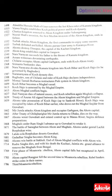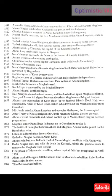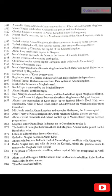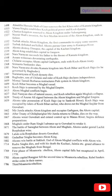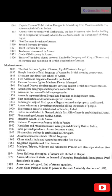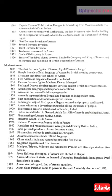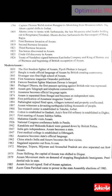In 1714, Rudra Singha dies; with his death, the Kashari-Jayantia alliance to remove the Mughals from Bengal ends. In 1769, the first phase of the Moamaria Rebellion takes place — the Ahom capital falls but is recaptured in April 1770. In 1783, the Ahom capital Rangpur falls a second time to the Moamaria rebels, whose leaders strike coins in their names. In 1786, the third Moamaria Rebellion takes place. In 1794, Captain Thomas Wells restores Rangpur to the Ahom king from the Moamaria rebels; the Ahom capital shifts to Jorhat.